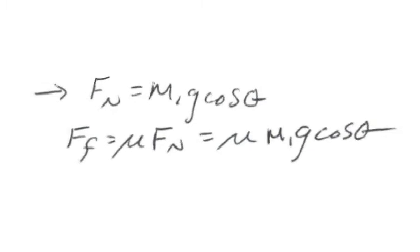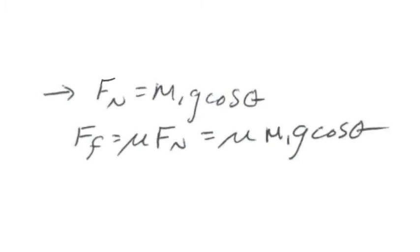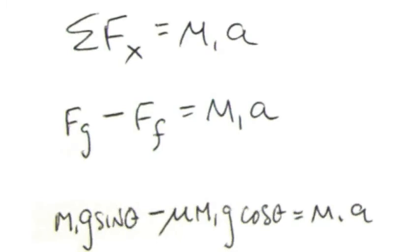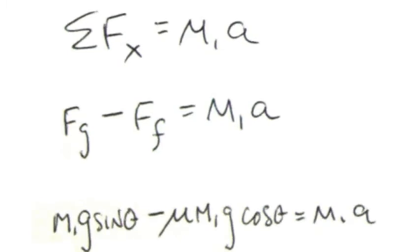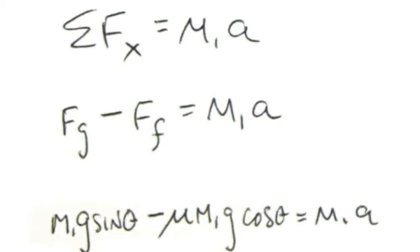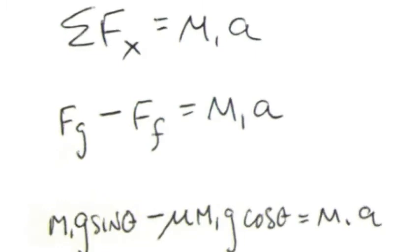As long as the gravitational force is greater than the frictional force, we will have motion. Sum up all the forces in the x direction, and that equals ma. So we've got force of gravity minus force of friction equals ma, and there we've got our equation all set up.